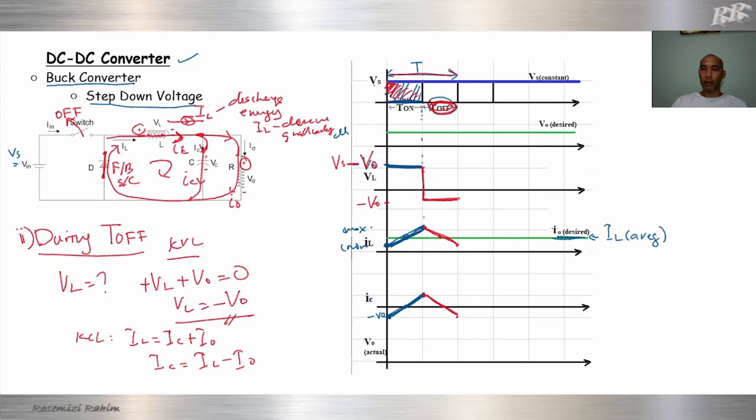So now we have completed one full period. The waveforms repeat: on, off, on, off — we just repeat the same waveform for VL, IL, and IC.